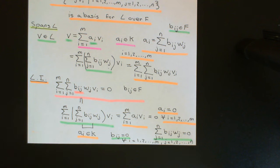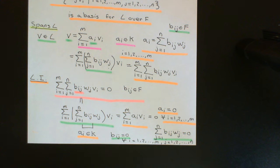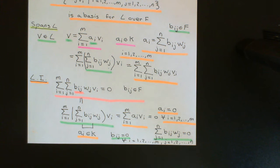Welcome back to this next video in which we are discussing the Tower Law. We've now proven that the Tower Law is true when the degree of L over K and the degree of K over F are both finite. What I now want to show is that it still works if either of those two things are infinite.